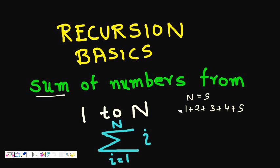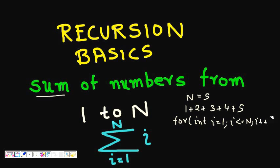This is very easy if you apply a for loop. We can write: for int i equal to 1, i less than or equal to n, i plus plus, and we have int s equal to 0, so s equals s plus i. This will do it for us.